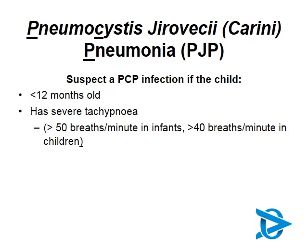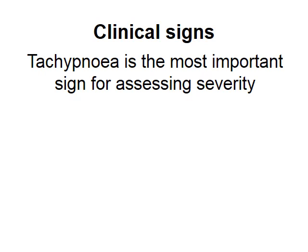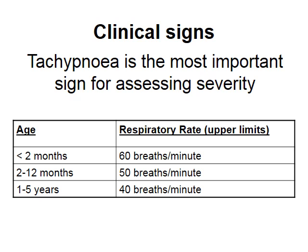Children with PCP have severe tachypnea as the most prominent symptom — defined as more than 50 breaths per minute in infants under one year, and more than 40 breaths per minute in children between one and five years. The child may obviously be short of breath and struggling to breathe. Surprisingly, when you listen to the chest, there are relatively few crackles relative to the degree of dyspnea — you expect dramatic chest sounds but it doesn't sound that bad. The child may even be cyanotic. Tachypnea is the most important sign for assessing severity, using the same respiratory rate thresholds used to decide about pneumonia. At this stage you cannot differentiate bacterial pneumonia from PCP clinically.